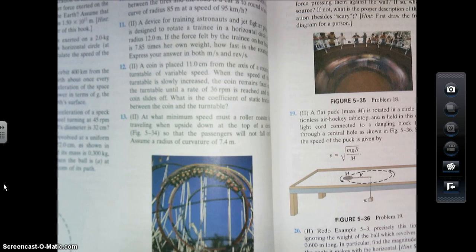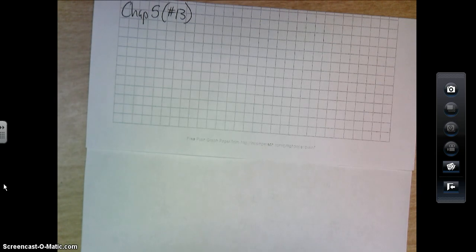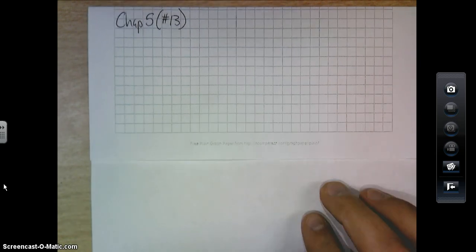Okay, so this is oftentimes challenging to think about here, but it says the minimum speed so that the passengers don't fall out, which is obviously important.